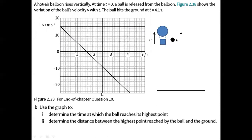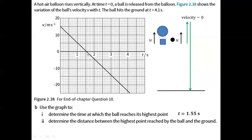Next question: determine the time at which the ball reaches the highest point. The ball initially has a vertical velocity directed upwards, so it travels a certain vertical distance, reaches its maximum point where it becomes momentarily at rest — meaning velocity is zero — then the velocity changes direction so that it can fall down. Since velocity is zero at the maximum point, we find the time at which velocity equals zero, which is at t equals 1.55 seconds. Beyond 1.55 seconds the velocity is negative, corresponding to the ball falling.